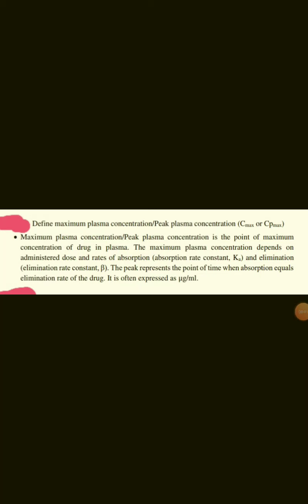Define maximum plasma concentration or peak plasma concentration. Maximum plasma concentration or peak plasma concentration is the point of maximum concentration of drug in plasma. It depends on administered dose and rate of absorption and elimination. The peak represents the point in time when absorption equals the elimination rate of the drug. It is often expressed as microgram per ml.